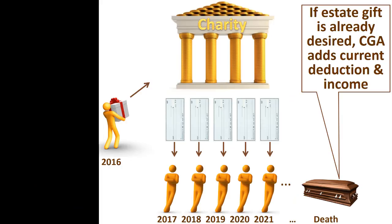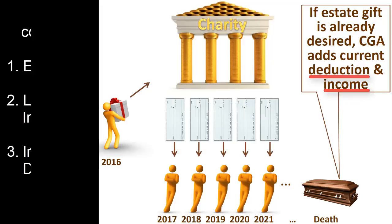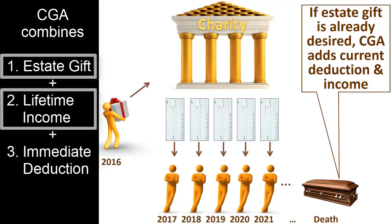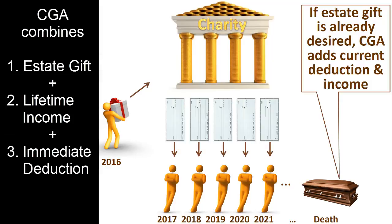From a donor's perspective, a charitable gift annuity can be preferable to leaving the same amount as a bequest gift because a bequest gift generates no income tax deduction and no lifetime payments. For a donor with the twin goals of generating lifetime income and making a post-mortem gift to a charity, the gift annuity works far better than alternative strategies such as investing and leaving a gift to the charity by will.